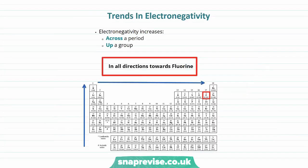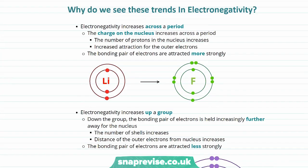Now let's have a look at the trends we see in electronegativity. In general, electronegativity increases across a period and up a group - essentially it's increasing in all directions towards fluorine.